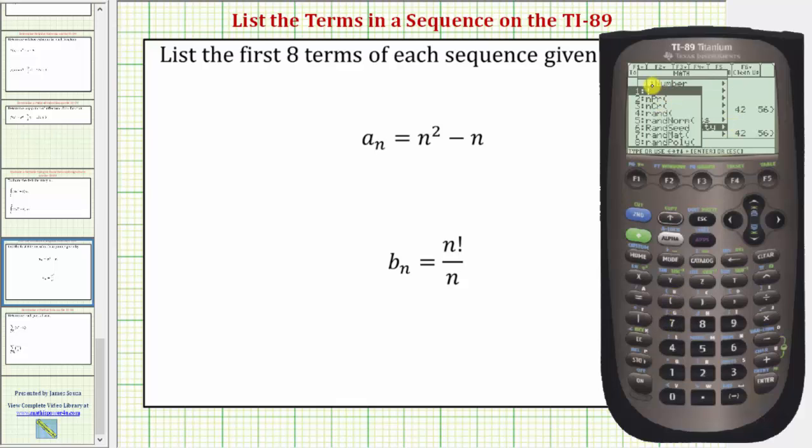And notice how the factorial is the first option. So we press one. So there is the n factorial. And now divided by n which is alpha six, again alpha six, comma the variable n, which is alpha six, comma.